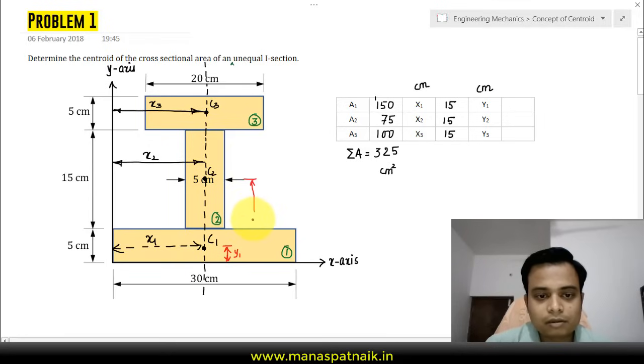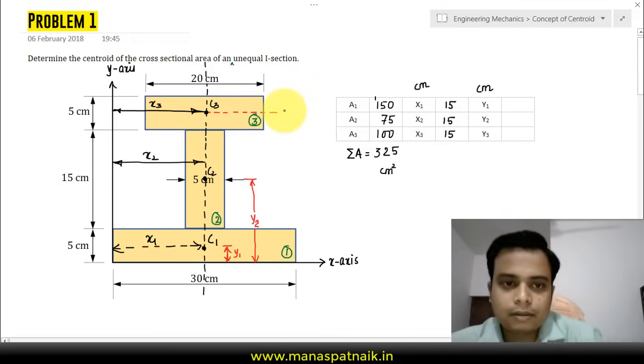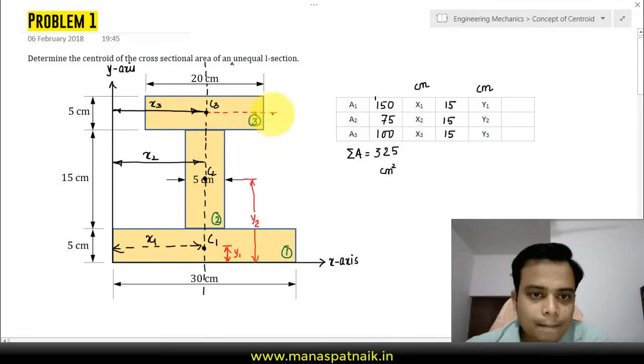This distance over here that you see, that is y2, and this distance over here, that's y3. Extremely sorry I cannot draw a straight line with the help of this pen tablet.